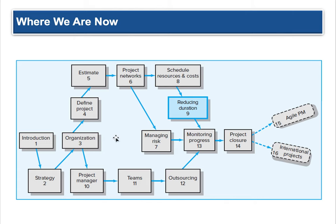You guys are very familiar with the arrow node right now. This was in line with managing risk. Then we're going to come back in on Chapter 13 and do monitoring progress. But way back here, we were doing organization. We're going to next start talking about a project manager and teams and then outsourcing.